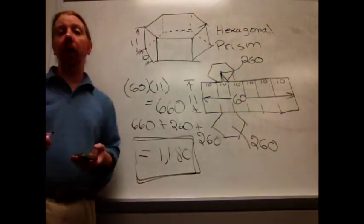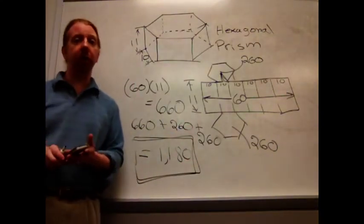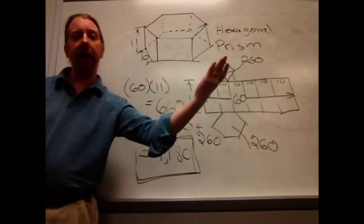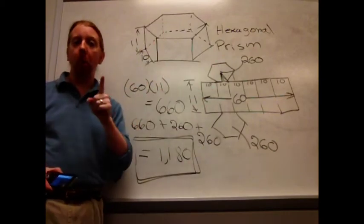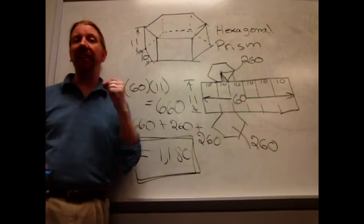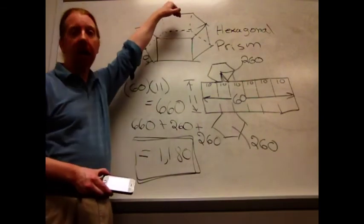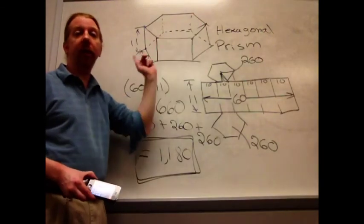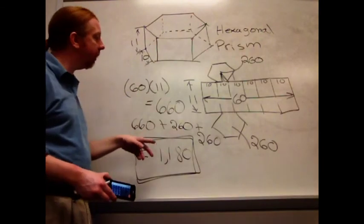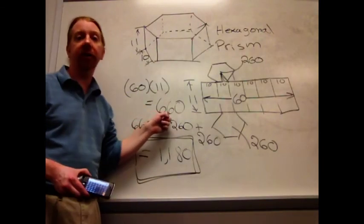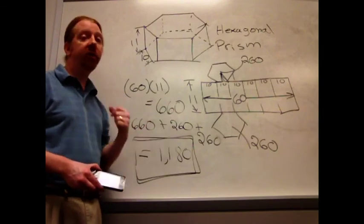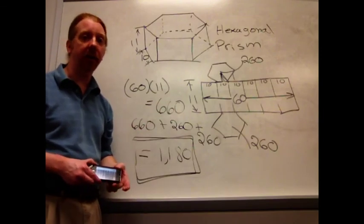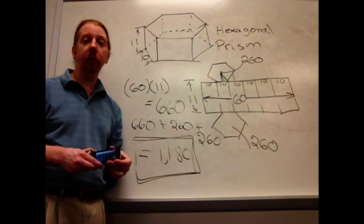And that represents the sum of these three individual areas, the top, the bottom, and the lateral. Or you could look at this as eight individual spaces. My top, my bottom, and my six rectangles going around. Each of those rectangles having an area of 110. There are six of them. So you end up back at that 660 value. Whatever strategy you like is the one you want to use.